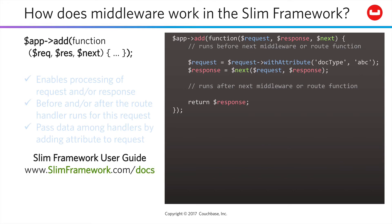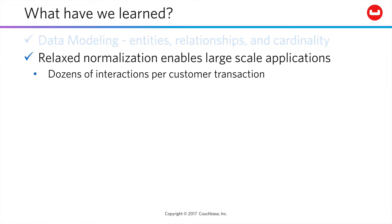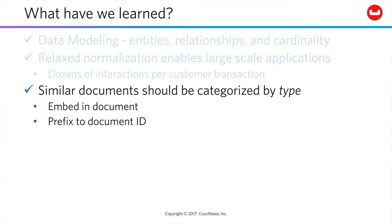If you'd like to know more about middleware, check the SLIM framework docs. In the lab, all the code will be there for you to examine and play with. So what have we learned here? First, data modeling is the notion of examining the entities, relationships, and cardinality within the particular software domain you're writing code for. Relaxed normalization enables large-scale applications — modern software deals with dozens of individual interactions per customer transaction. They're moving through your website for a long time before they hit the buy button, so you need a database that can scale appropriately as well as follow the changing nature of your underlying data structures.